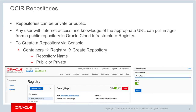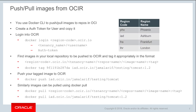To create a repository within the registry service, you navigate to the registry service and provide a repository name and whether it is public or private. It is also a regional service, so you can create repositories in all different OCI regions. Once the repository is created, you can use standard Docker v2 APIs or CLI to push or pull images.